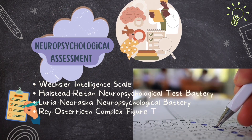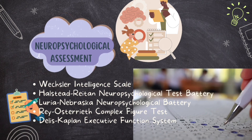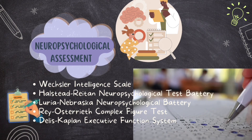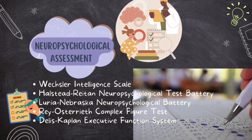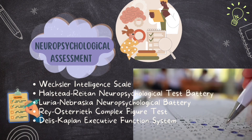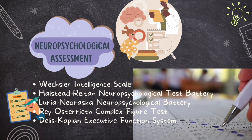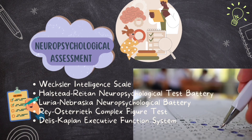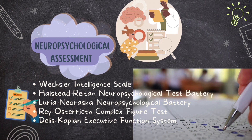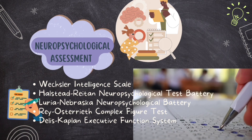Common neuropsychological tests include the Wechsler Intelligence Scale, which measures intelligence for both adults and children of different ages. The Halstead-Reitan Neuropsychological Test Battery checks everything from thinking skills to motor functions. The Luria-Nebraska Neuropsychological Battery helps find problems in areas like memory, language, and intelligence. The Delis-Kaplan Executive Function Test evaluates a person's thinking skills and decision-making abilities, useful for understanding the brain's executive functions.